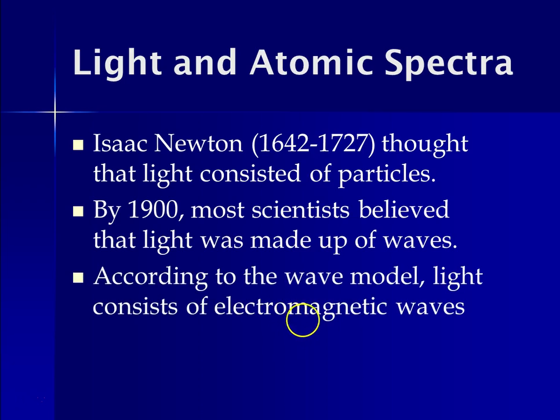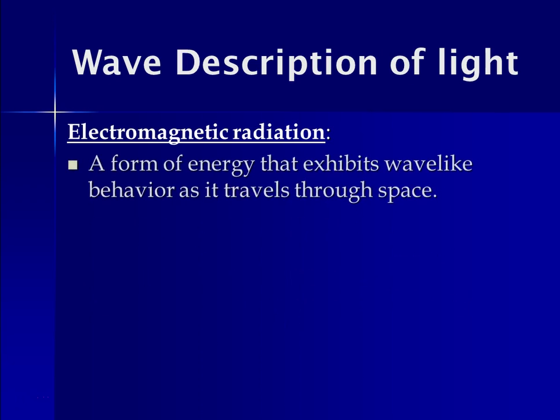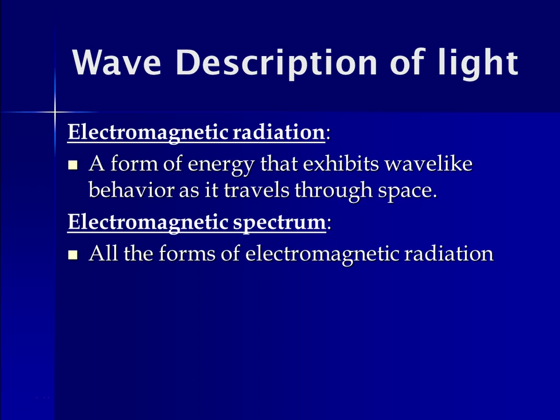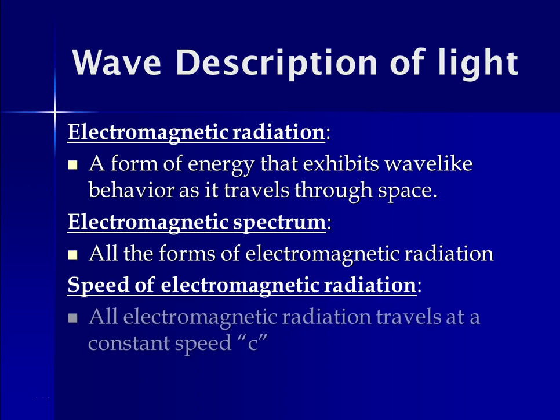And according to the wave model, light consists of electromagnetic waves. So when I say electromagnetic radiation, I'm referring to the form of energy that exhibits wave-like behavior as it travels through space. And when we refer to the electromagnetic spectrum, we're talking about all the forms of electromagnetic radiation in our universe. And the speed of all electromagnetic radiation in our universe is constant.